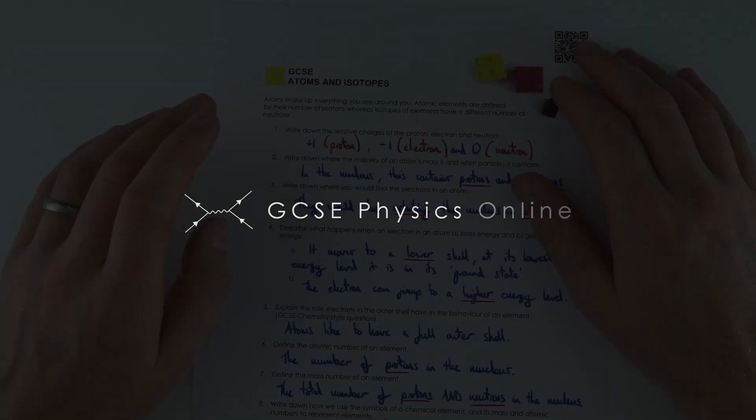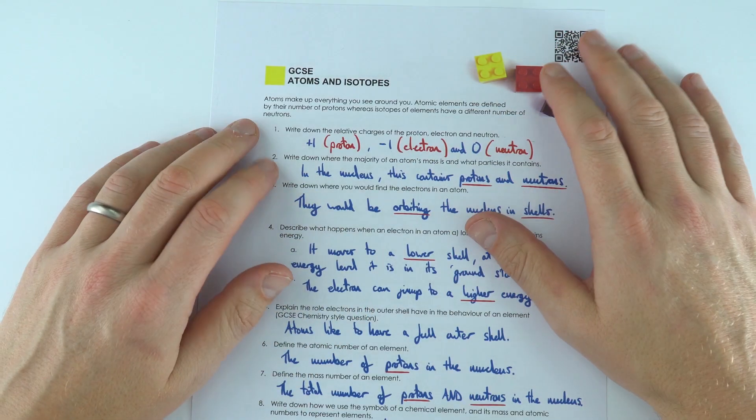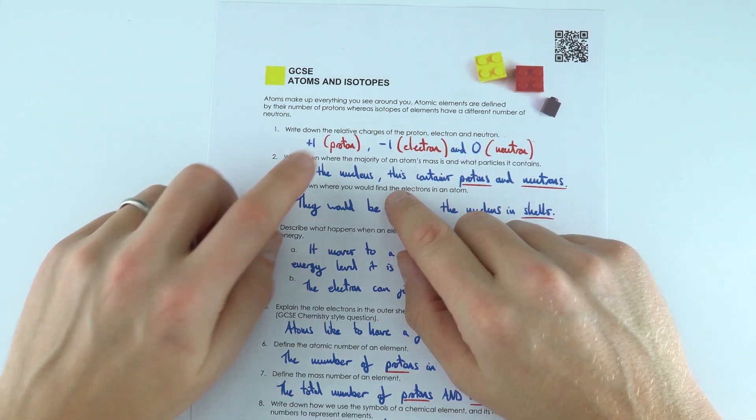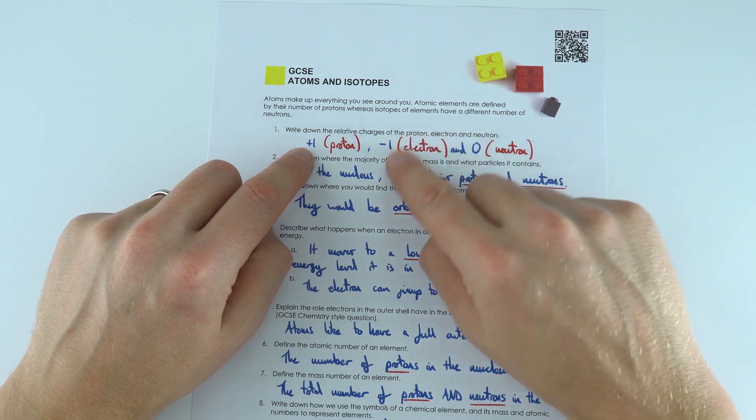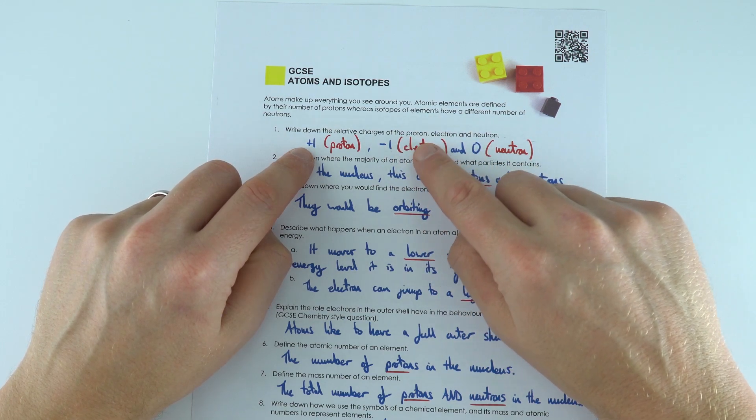This worksheet has loads of connections with the work you're doing in GCSE chemistry. Inside the atom we've got protons which are positive, neutrons which are neutral, and also these negative electrons. You'll have learnt all about these when you've been doing your work on electricity.